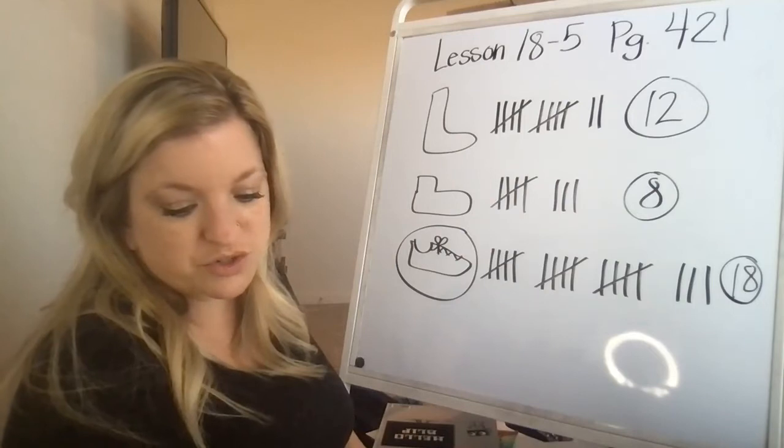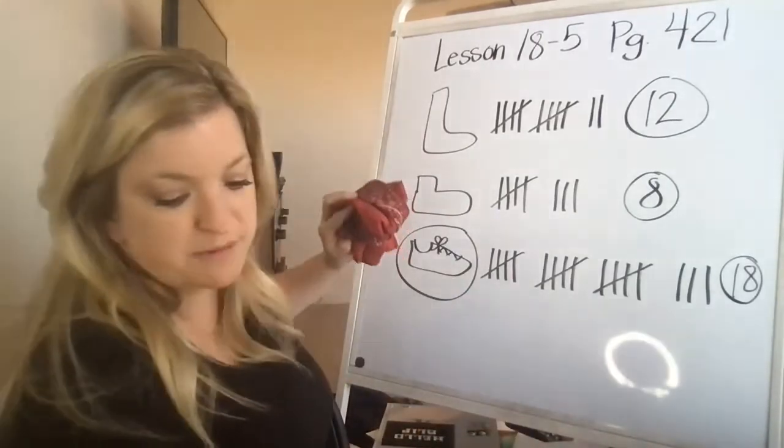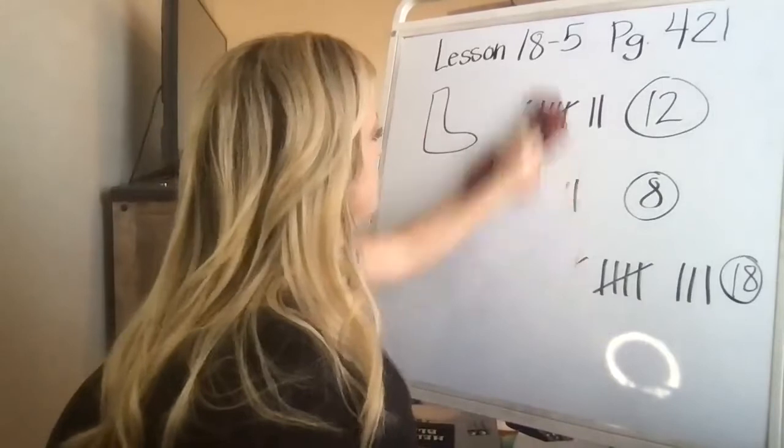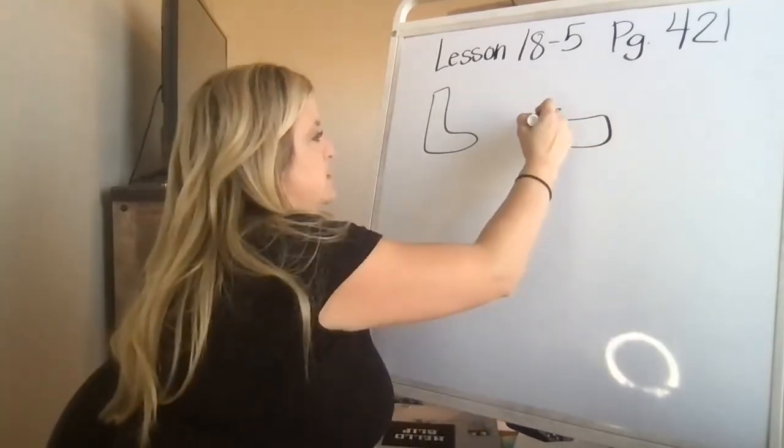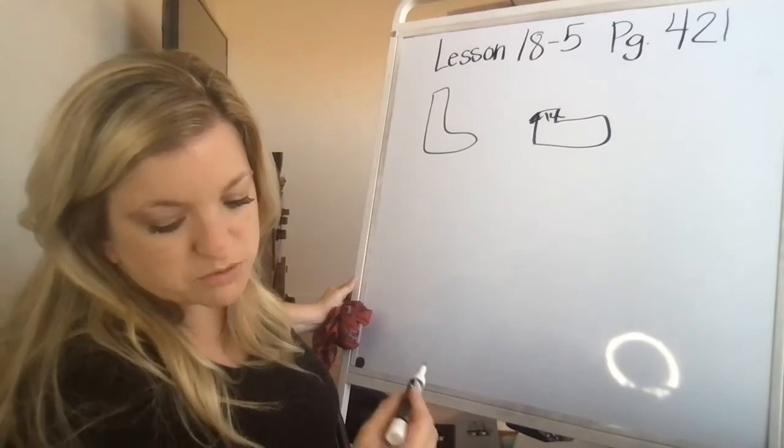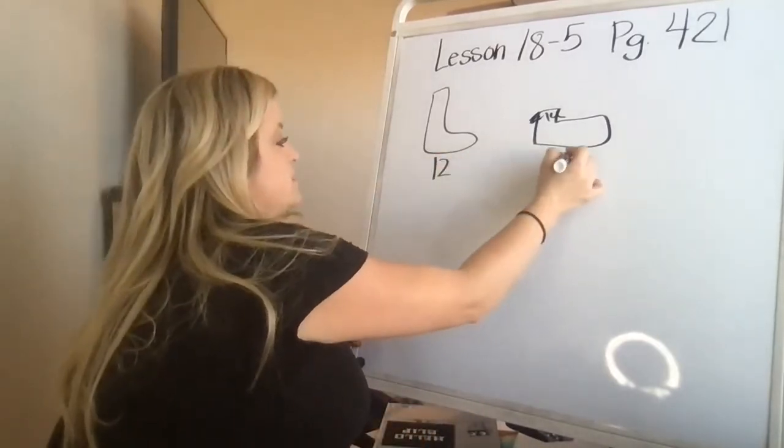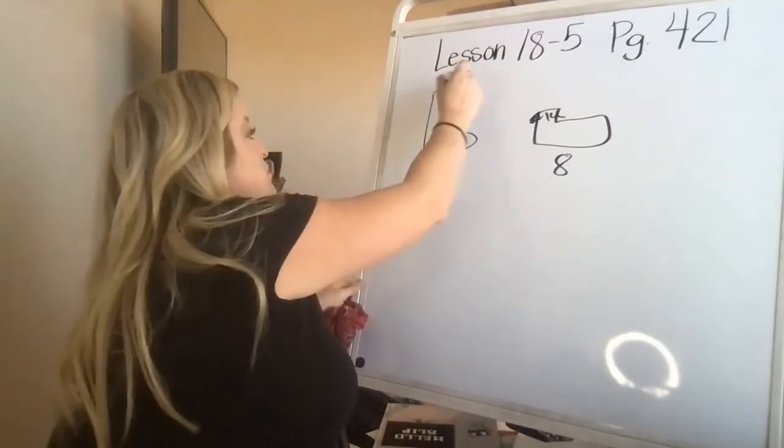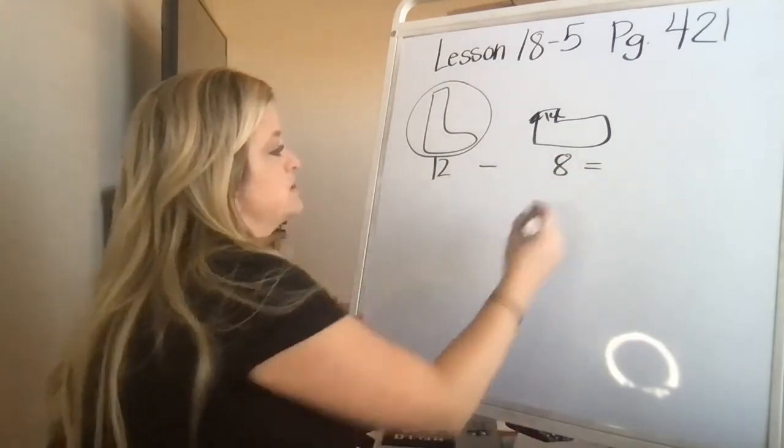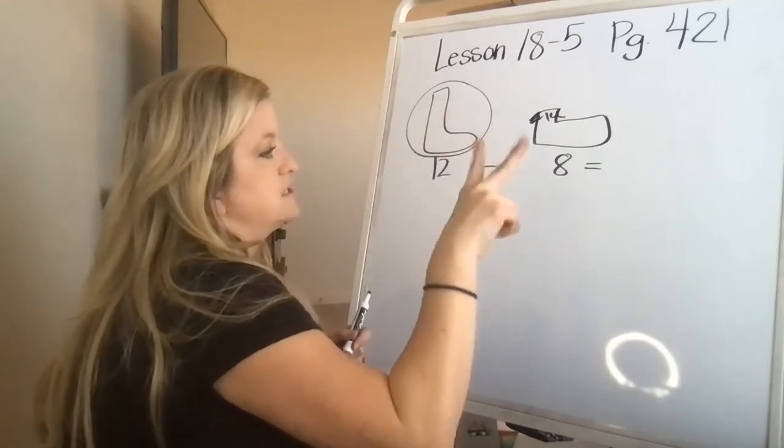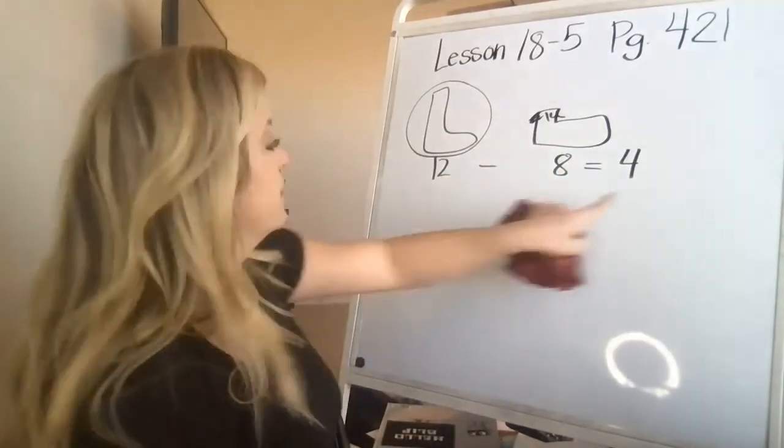Number four, circle what more children like. Write how many more. So I'm going to erase. I'm going to keep my boots here because it wants to know, do they like the boots or do they like the little moccasin thing with the fur, like maybe it's a slipper? Circle what more children like. Do they like the boots or the moccasins? The boots were at 12 and these were at eight. So you would circle the boots and then you need to find the difference. So it'd be 12 minus eight. I'm going to start at eight and I'm going to count on to 12: eight, nine, 10, 11, 12. Four more kids liked boots than slippers. So you'd write a four on that line.